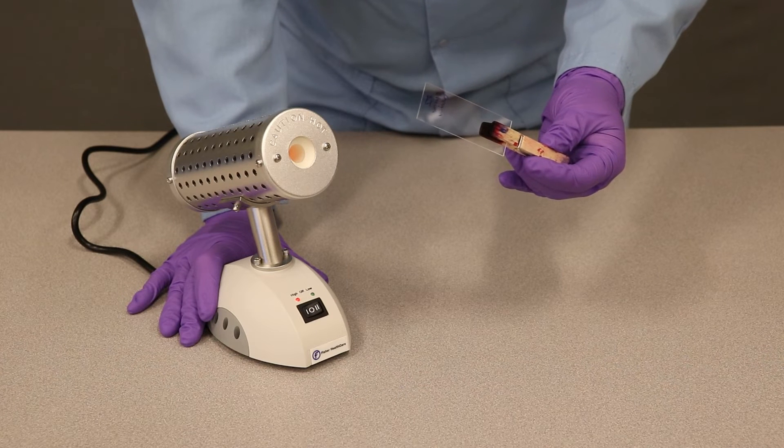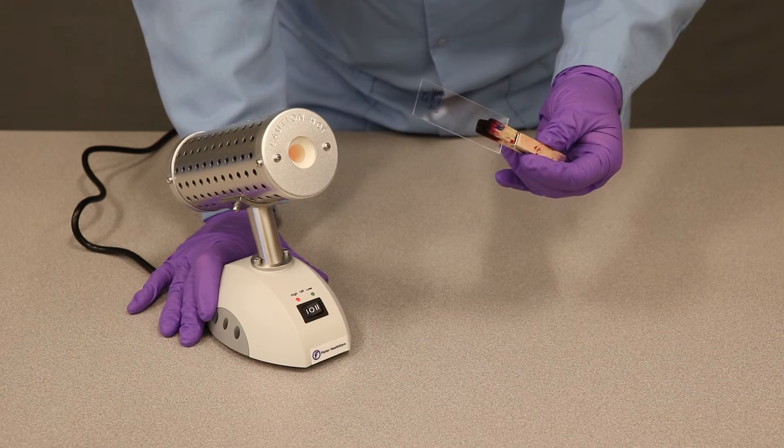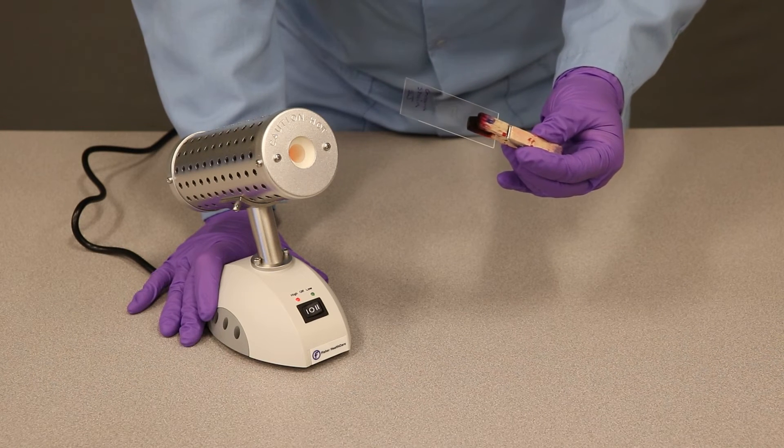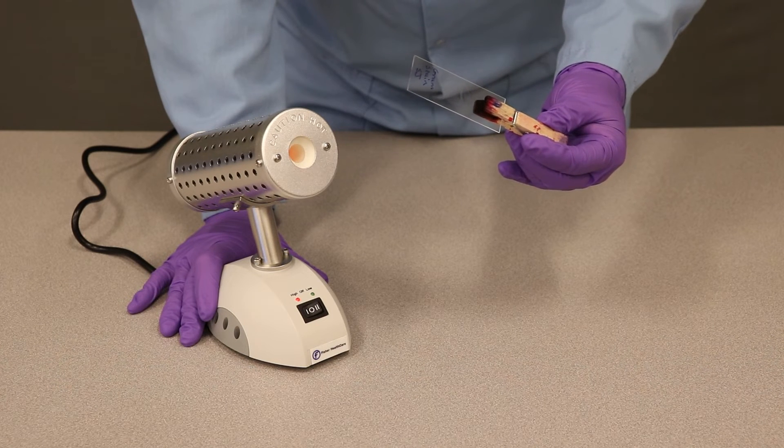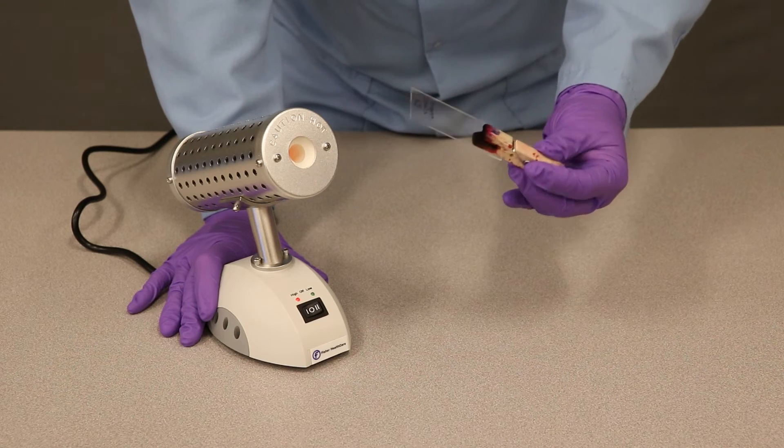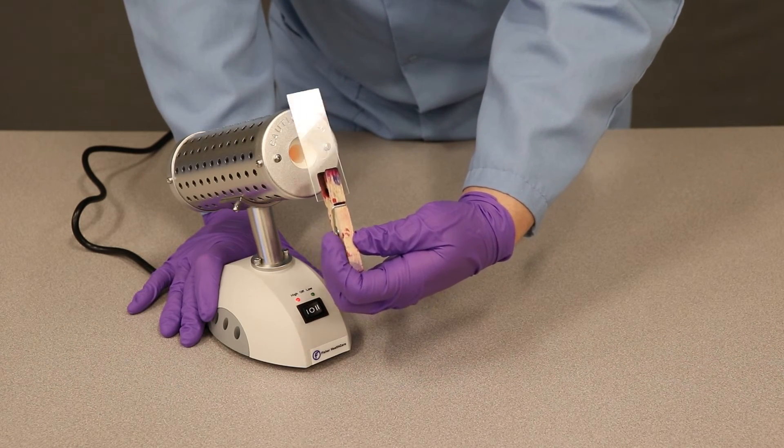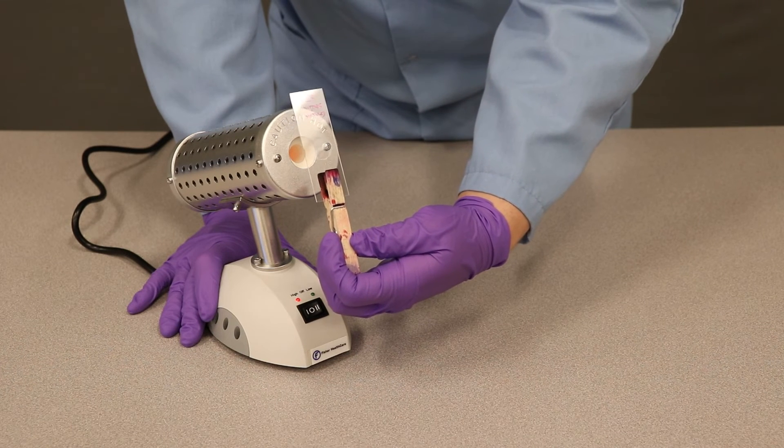Another thing you can use the Bact incinerator for is to heat fix a slide to prepare it for staining. This will be different than when you heat fix using a Bunsen burner because you'll be holding it in the heat for a bit longer than you would for a Bunsen burner. To heat fix, you hold the slide in front of the opening to the mantle and hold it there for about 10 to 20 seconds depending on how thick the smear is.